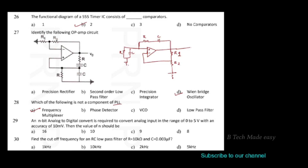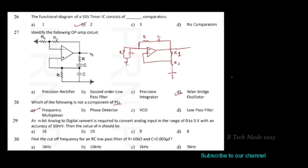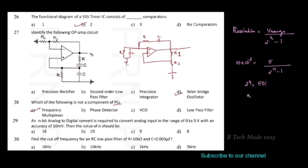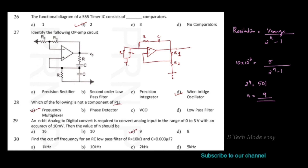Next question: an N-bit analog-to-digital converter is required to convert an analog input in the range 0 to 5 volts with an accuracy of 10 millivolts. Then the value of N should be? Resolution equals voltage range divided by (2^N − 1). So 10 × 10⁻³ equals 5 divided by (2^N − 1), giving 2^N equals 500 + 1, so N is approximately 9.